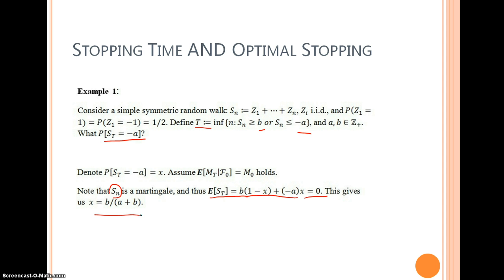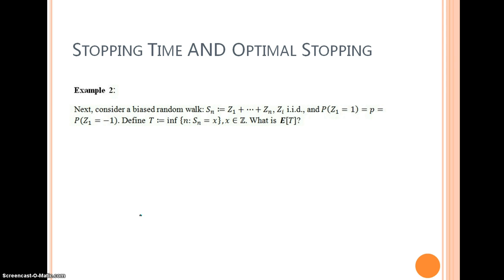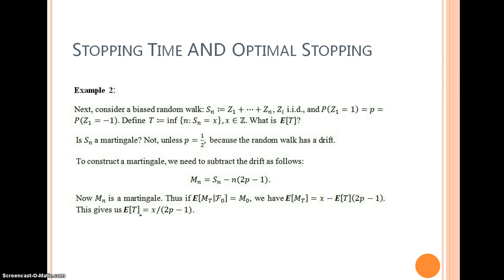So what if the random walk is not symmetric? What if it has a bias? Now S_n is not a martingale. To employ the same method we used in example 1, we have to construct a martingale by subtracting the drift as follows. So here M_n is a martingale constructed by subtracting the drift.